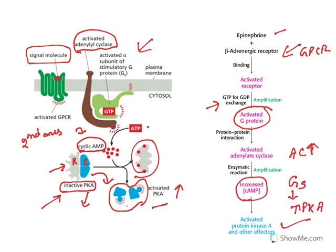Whereas Gi — S means stimulation and I means inhibition — it reduces adenylate cyclase activity. So both Gs and Gi act in opposite manner on adenylate cyclase.